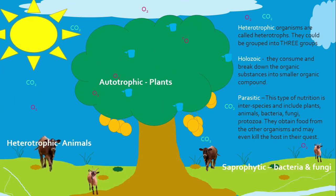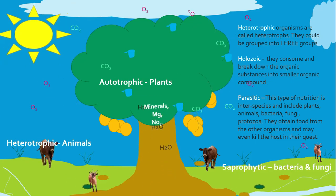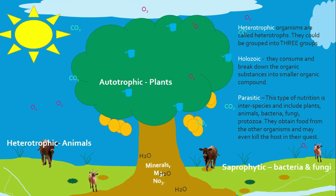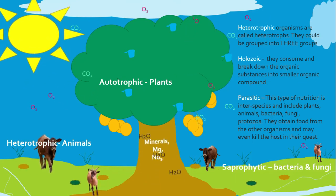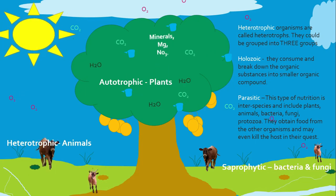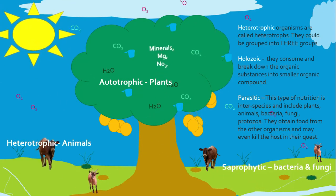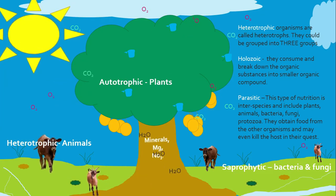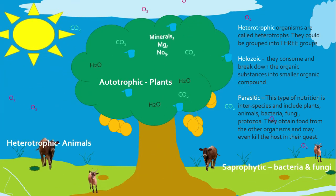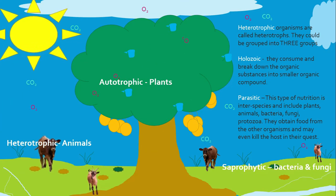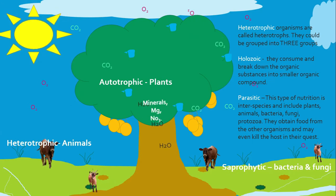First, they do ingestion, then digestion, absorption, assimilation, ejection — and some might even say excretion. Parasitic nutrition is interspecies. One organism from one species feeds on another organism from another species, and it includes plants, animals, bacteria, fungi, and even protozoa. They obtain food from the other organism and may even kill the host — that's the organism they are feeding on — in their quest to find food.